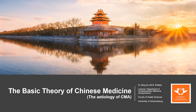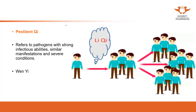Hello everyone. In this video, we are going to talk about another pathogen: Pestilence Qi. On the definition, it refers to pathogens with strong infectious abilities, with similar manifestations and severe conditions. So this qi, this pathogen, Pestilence Qi, is different from the six exogenous pathogens we mentioned in the previous video.